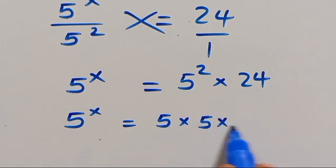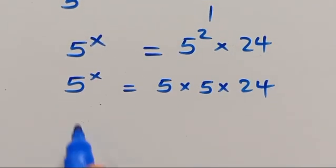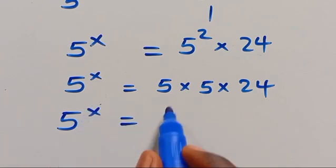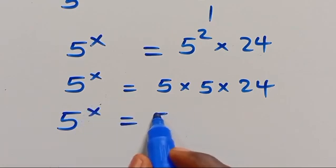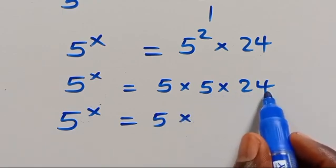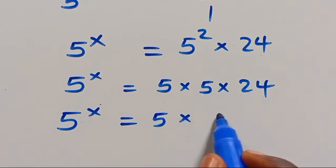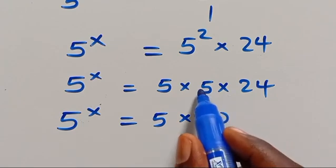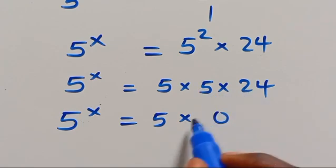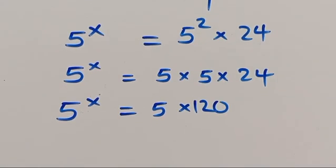So 5 times 5 times 24: 5 times 5 is 25, then 2 times 5 is 10, giving us 120. Wait — 5 times 5 is 25, and 25 times 24 gives us 600. Let us introduce log to both sides.